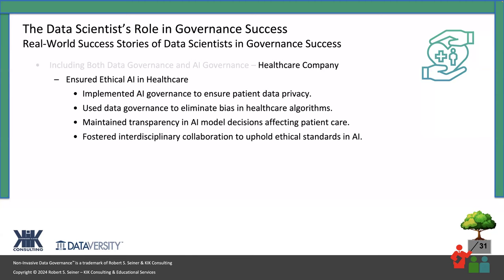Here's an example from a healthcare organization: they implemented AI governance — though they didn't really refer to it as data governance — but the part of AI governance that focused on ensuring privacy for patients was certainly data governance related. They got their data scientists involved in implementing AI governance and understanding the rules and regulatory concerns around protecting patient privacy. They used governance to eliminate bias, maintained transparency in their AI models, and documented their AI models thoroughly so that when people used that data, they knew where it came from and confidence in the data was raised.